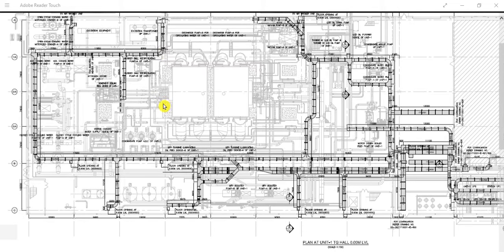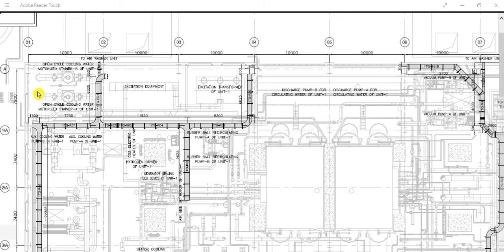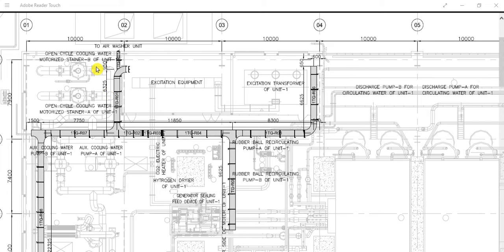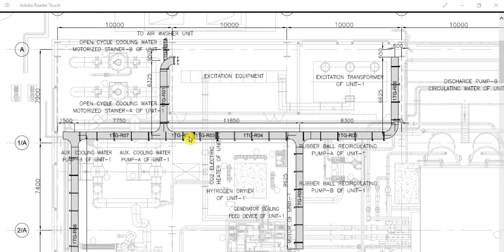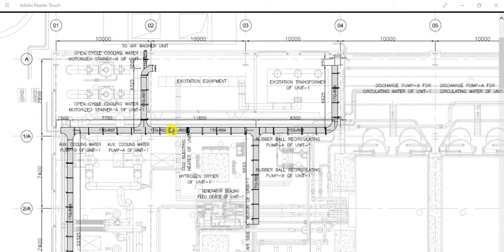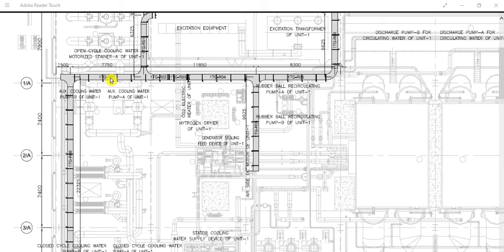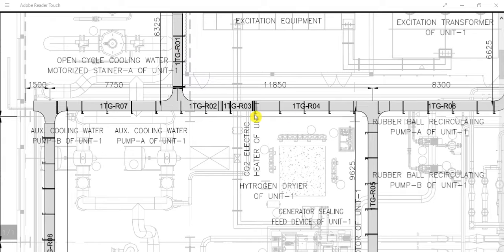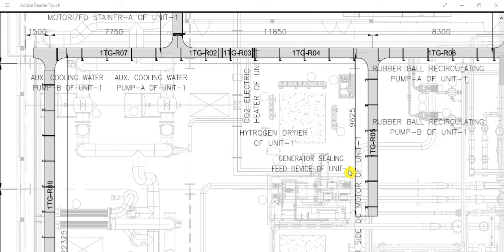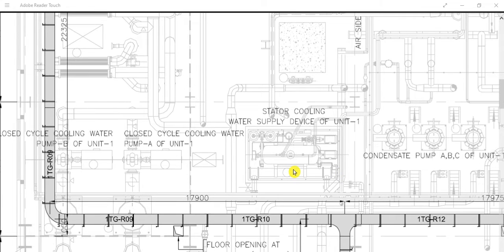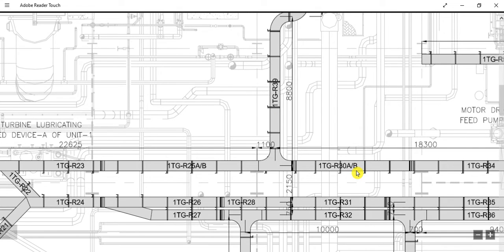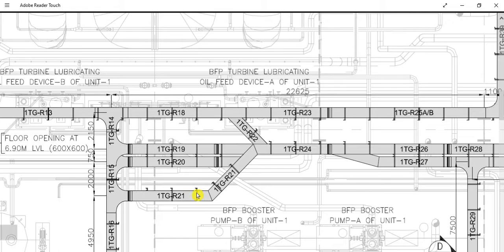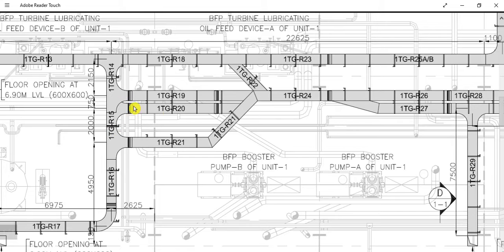This is the plan drawing where we have shown the cable tray routing. This colored line represents the cable tray. From the plan drawing we can identify the cable tray tag numbers, and these are the branches showing how the routing is done throughout the building. There are some reducers and T-joints as well.